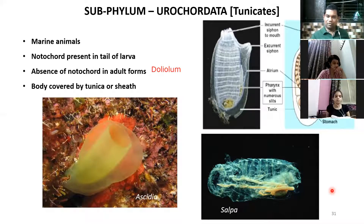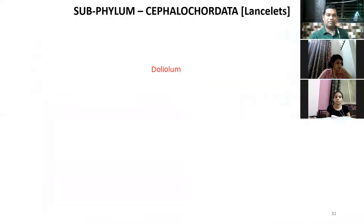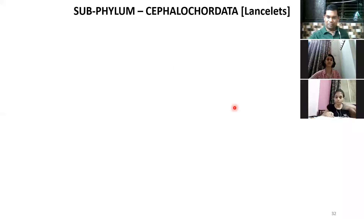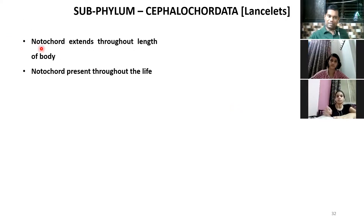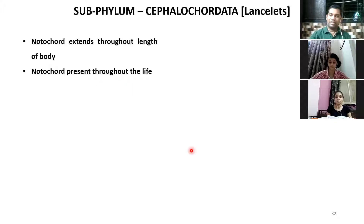The main key point for Urochordata is that they have a notochord in the tail of the larva, but once it becomes an adult, the notochord is lost. Next, coming to Sub-Phylum Cephalochordata, commonly called lancelets. From here onwards we can say these are true chordates, because the notochord is present throughout the length of the body and throughout the life, not only in the larva.